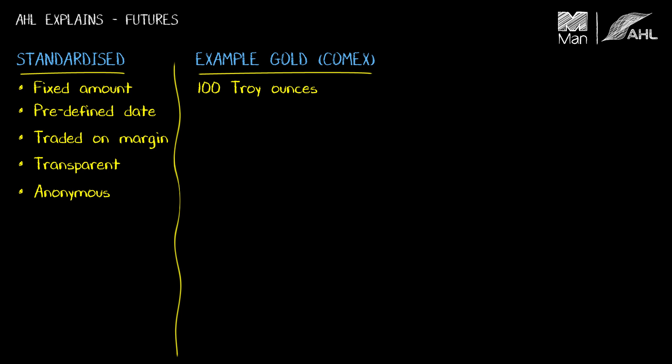There are various predefined dates that the contracts are available for — for example, June or December in this or next calendar year. The contract is quoted in dollars per ounce, so if you see the price on the trading screen you'd expect it to be about $1,200. A one-point move in the quoted price — say it goes from 1200 to 1201 — means each of the 100 ounces referred to by the contract would be incremented by one dollar, so the contract value would change by $100 for each point move.